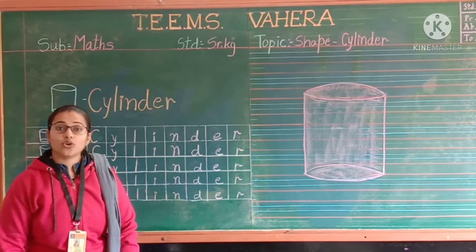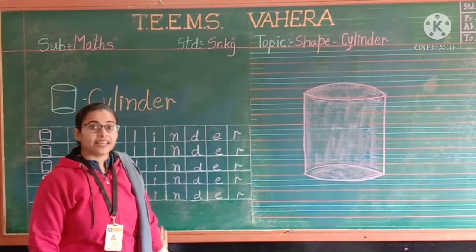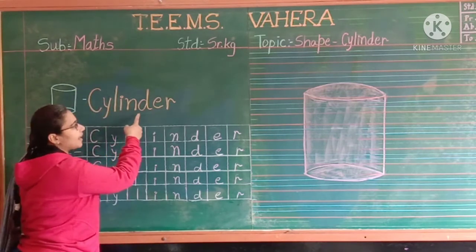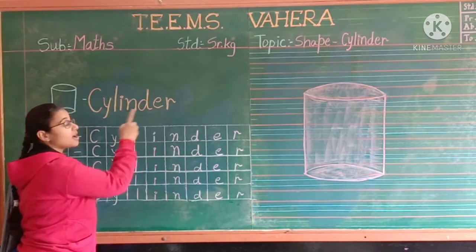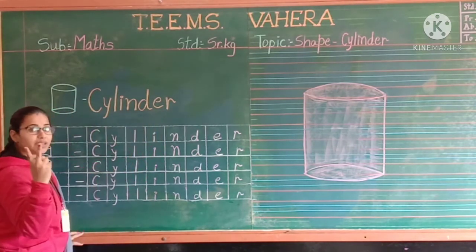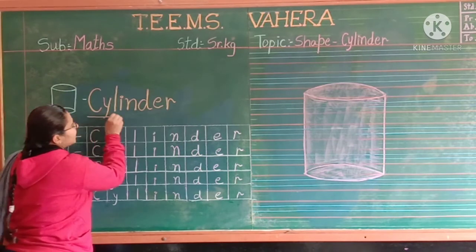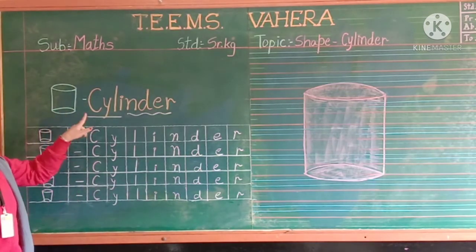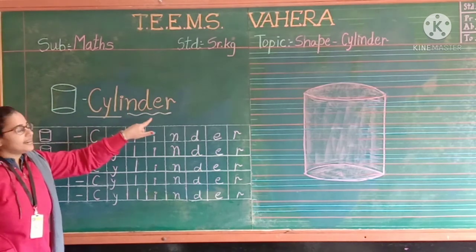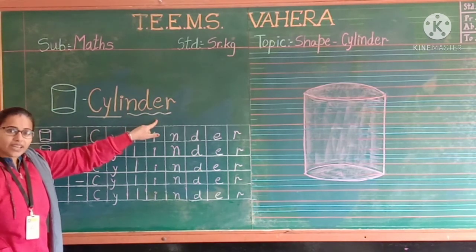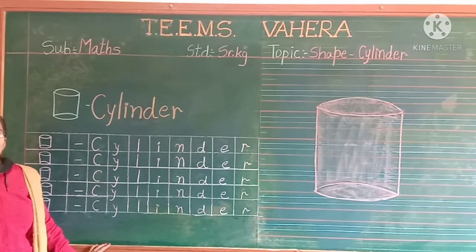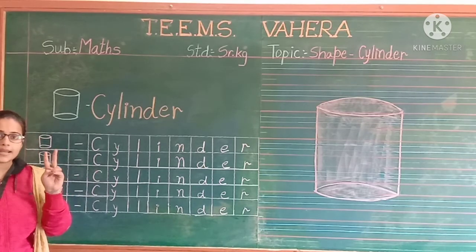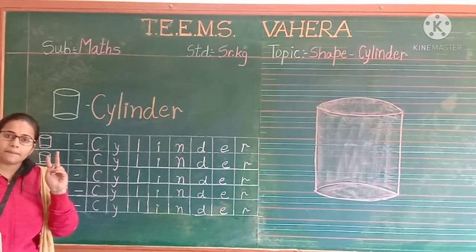If you want to write down the spelling, write C-Y-L-I-N-D-E-R. Cylinder. C-Y-L-I and D-E-R — cylinder. This way you have to write in your notebook from top to bottom. Two pages you have to write in your notebook. Okay, bye, thank you.